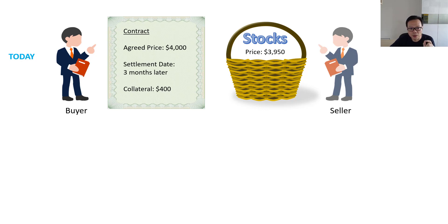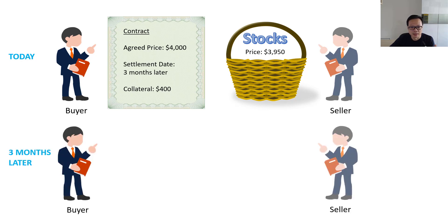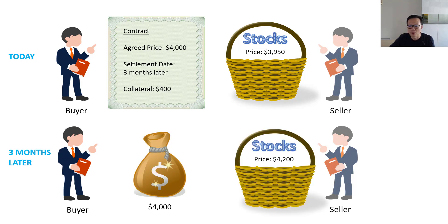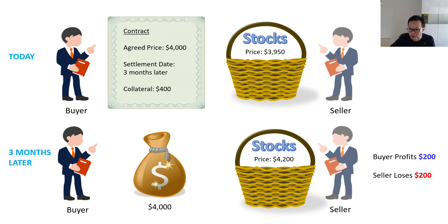On top of that, in order to make sure you honor the contract, the seller requires you to put a deposit of $400 with him — in case you back out of the deal if the share price drops. Then three months later, you've got the cash, and let's say the stock price by then has risen to $4,200. In honoring the contract, you pay the seller $4,000 — which includes the deposit you've already paid — as per the agreed price. In return, the seller hands you the basket of stocks. So technically you can now sell the stocks for $4,200, meaning you make $200 out of this deal, and in turn the seller loses out on the opportunity to make $200.